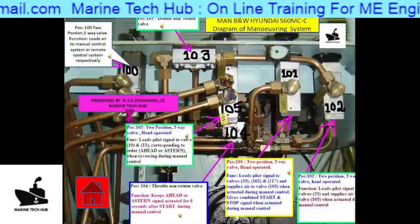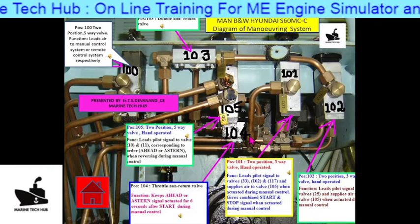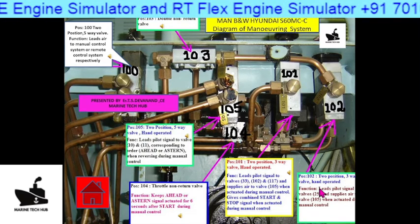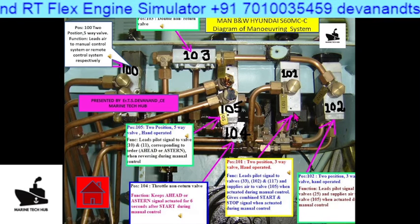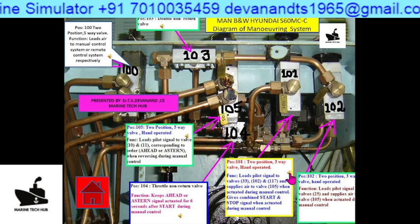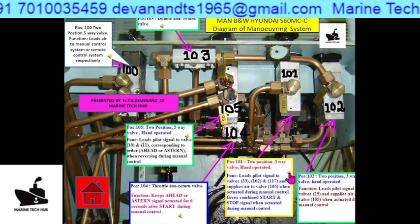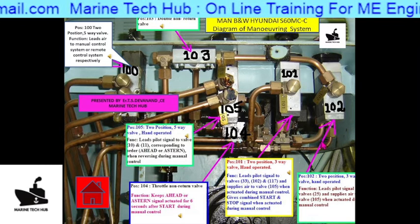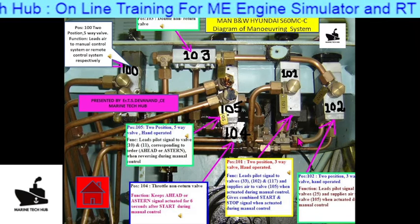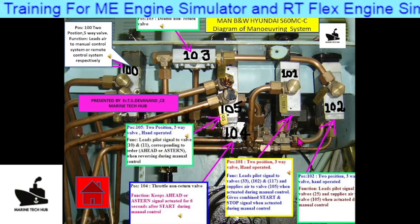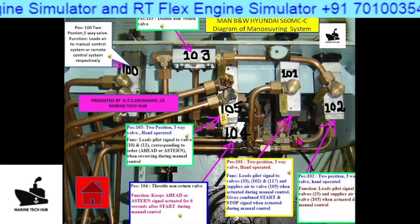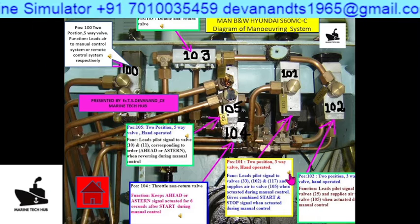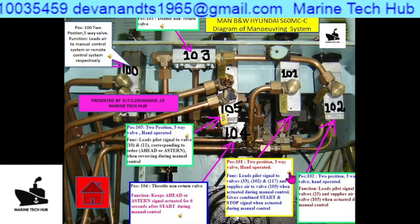Just click there and you will be able to see all the components. So 102 is here — you can see it is a two-position three-way valve. Like that you can see 101 also. Suppose you want to know what it is, you can click on the speaker icon. Once you click on the speaker icon, it will tell you: this block is position 101, which is a two-position three-way valve which can be hand operated. The function of this valve is to lead pilot signal to valve number 33, valve number 102, and valve number 117.